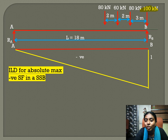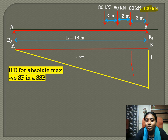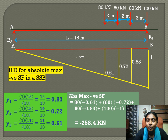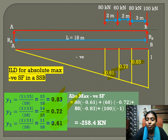After placing the 100 kN load at B, we find the ordinates under the other loads — under the 60 kN and 80 kN loads — using similar triangle principles. The ordinate values are 0.83, 0.72, and 0.61. Multiplying the magnitudes of the loads by their ordinates, we get the maximum absolute negative shear force as −258.4 kN.